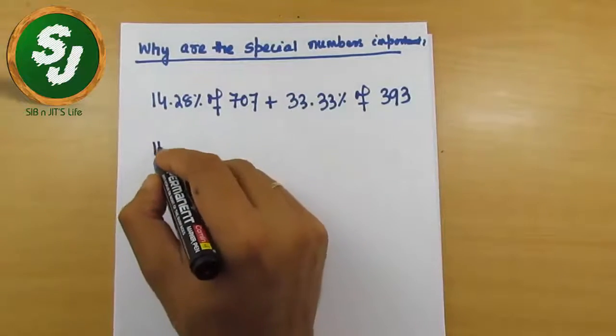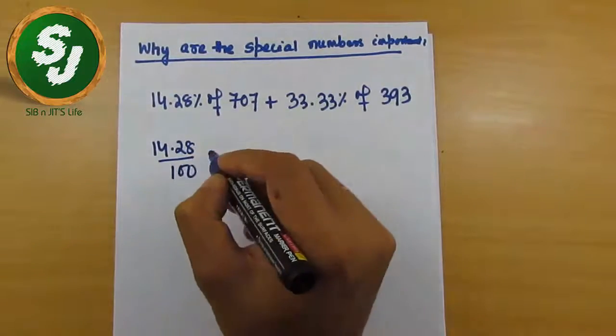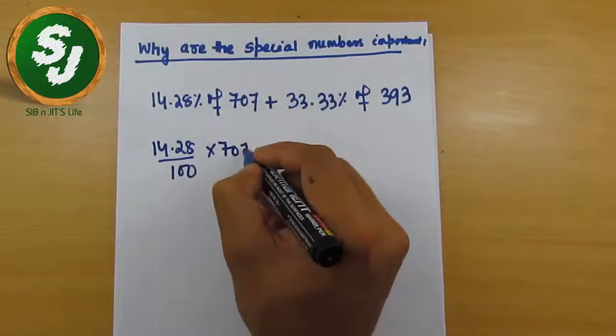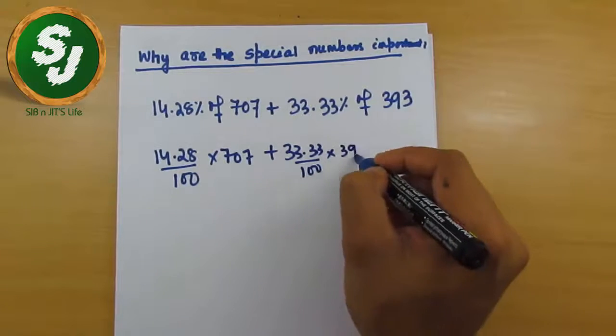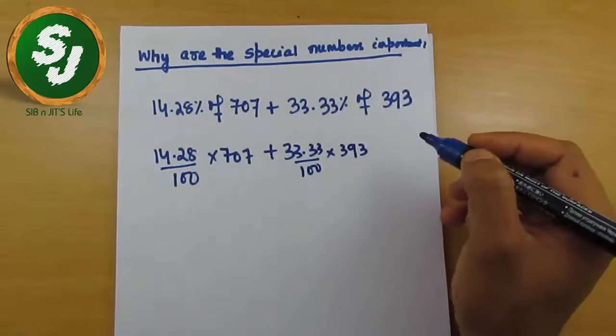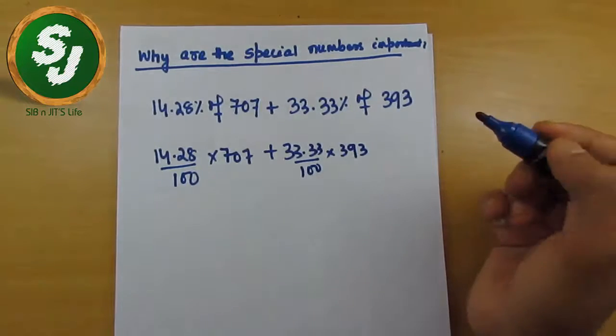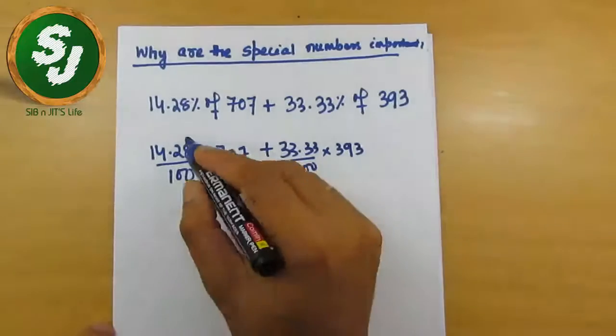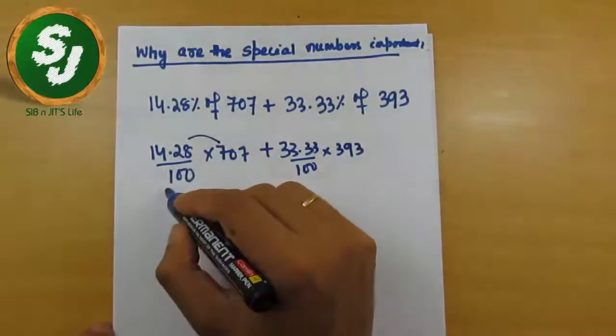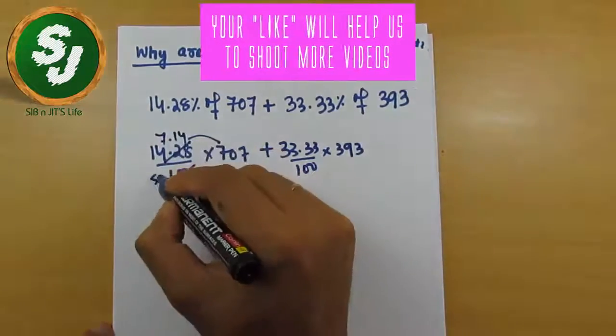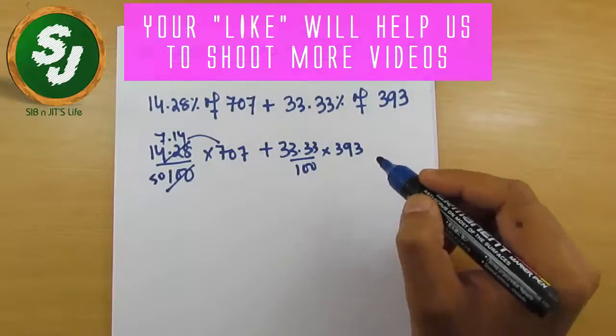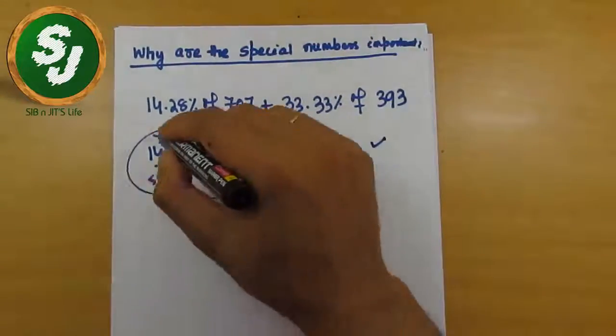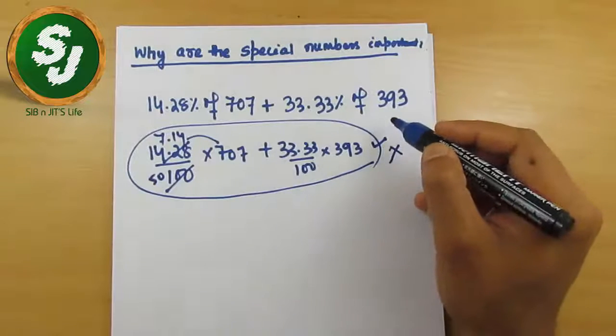Approach number one can be like this: 14.28 by 100 into 707 and 33.33 by 100 into 393. You cannot solve this question by doing this. What would be the next step? You cannot know. You'll either multiply these and divide by 100, or try to cancel. So many complications will be there once you try to solve this question this way. But this way is discarded now because they're involving very attractive spatial numbers.